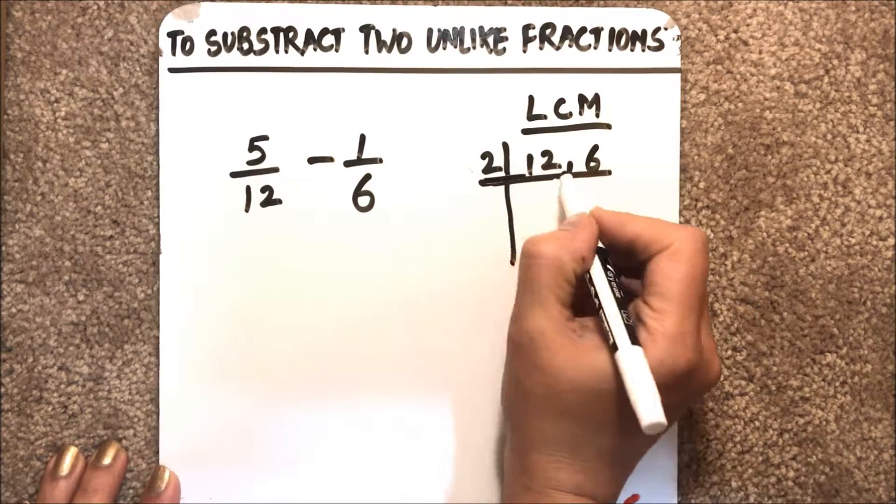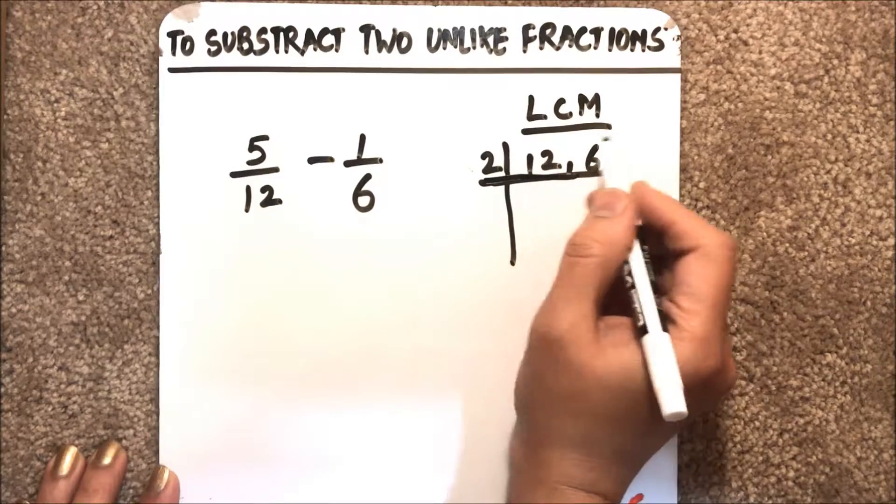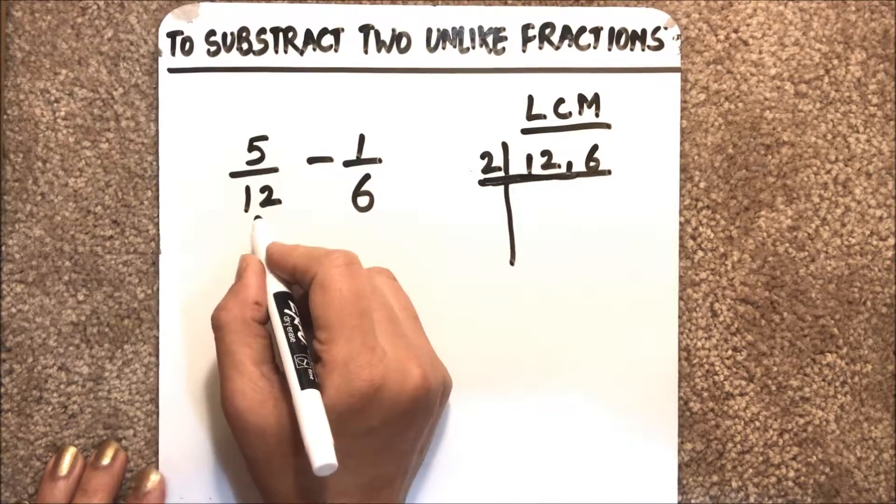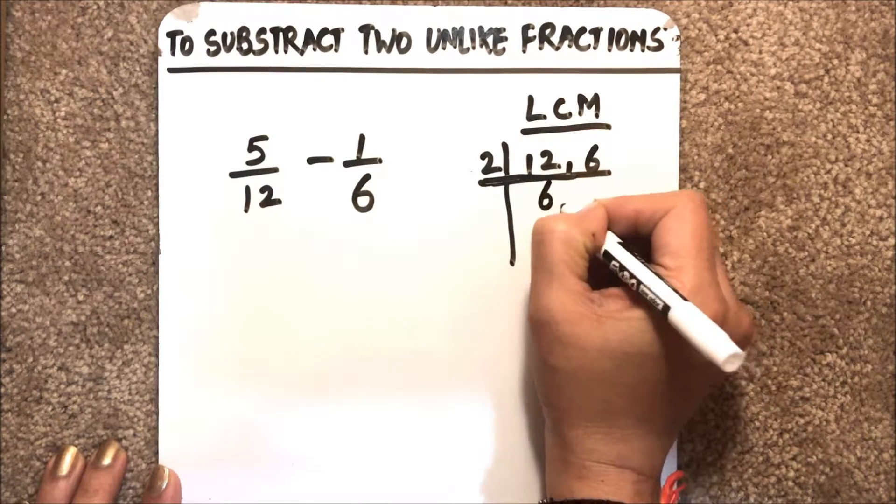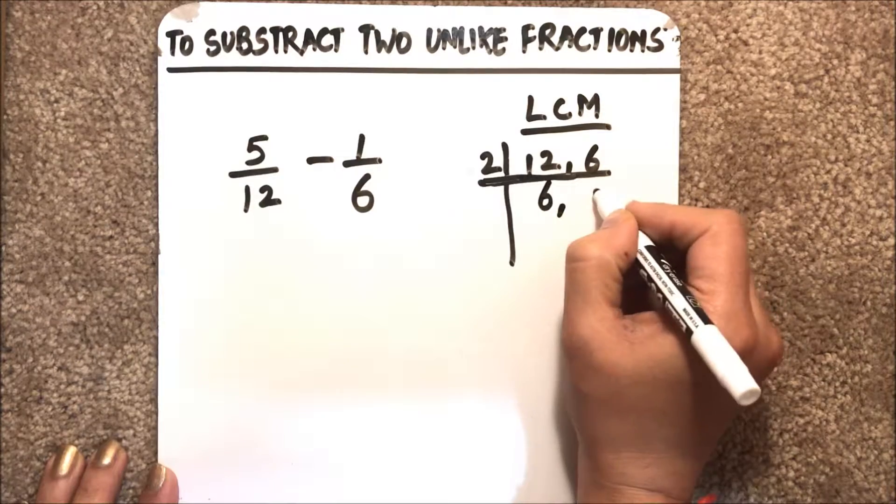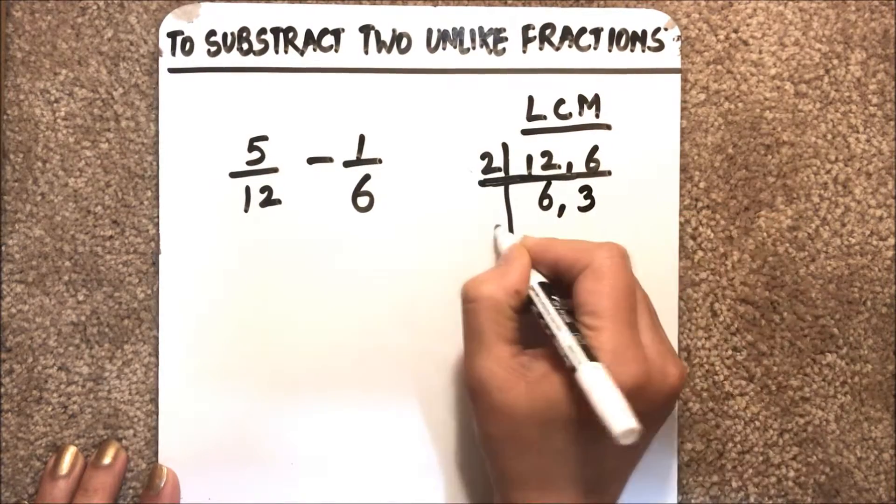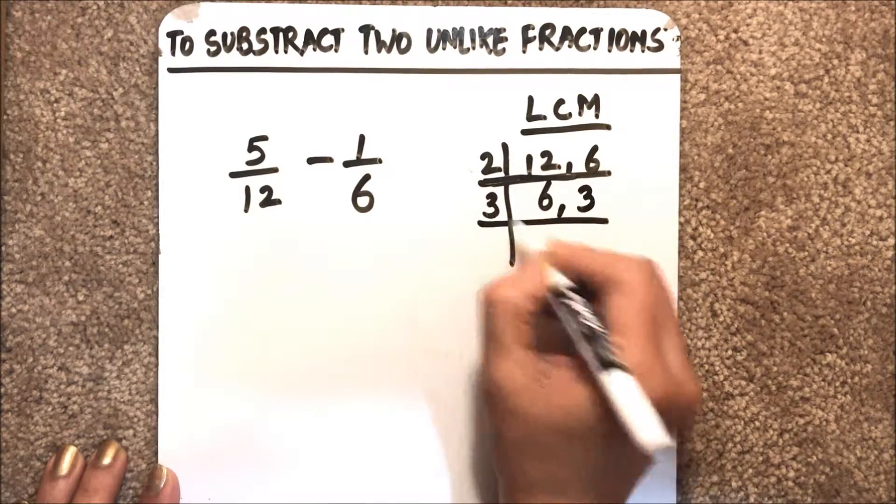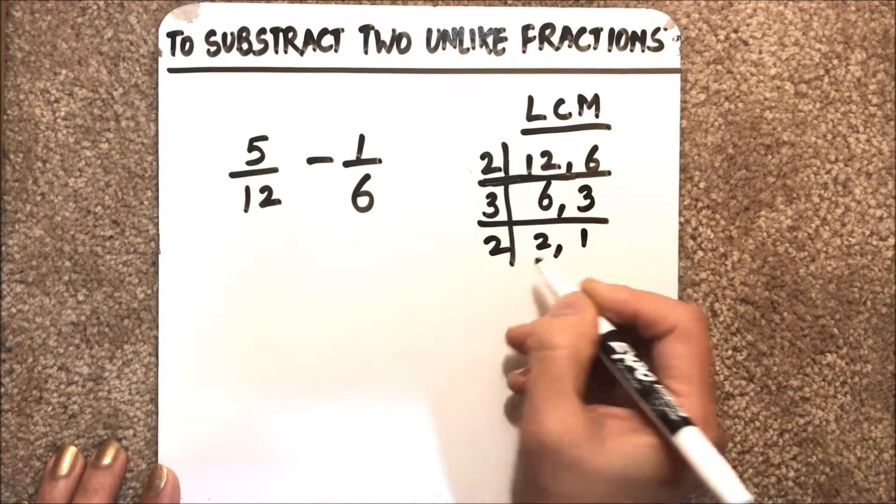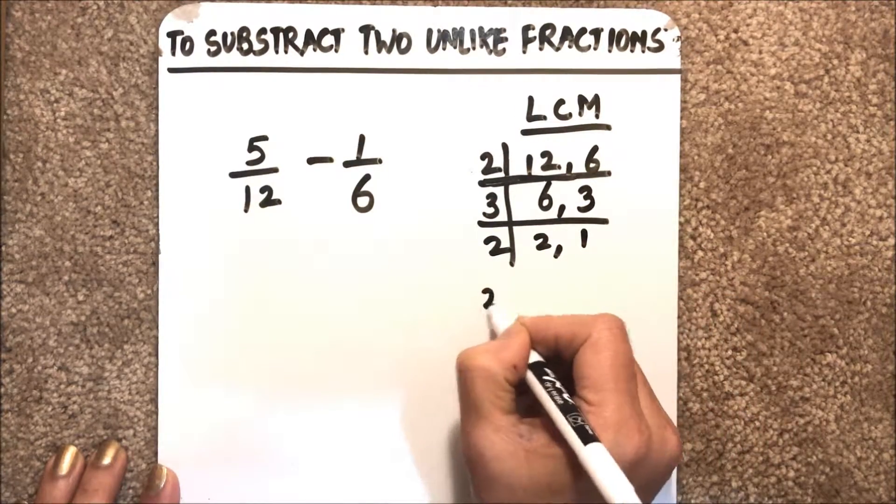So first of all, to subtract the two fractions, we'll find the LCM of the denominators. Here the denominators are 12 and 6, so we'll find the LCM. To know how to find the LCM, check out my other video. We'll proceed with LCM here, and we get the LCM as 12. 2 times 2 times 3, so 12 is our LCM.